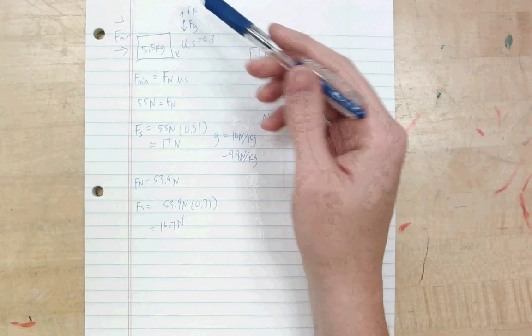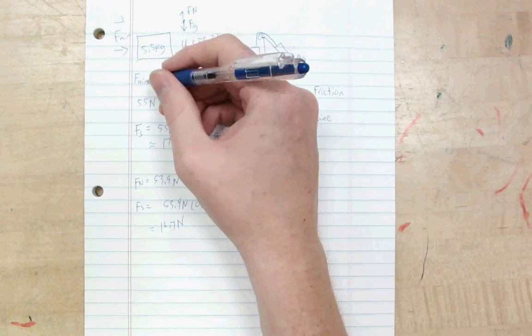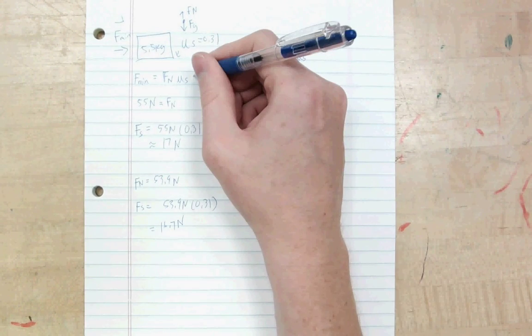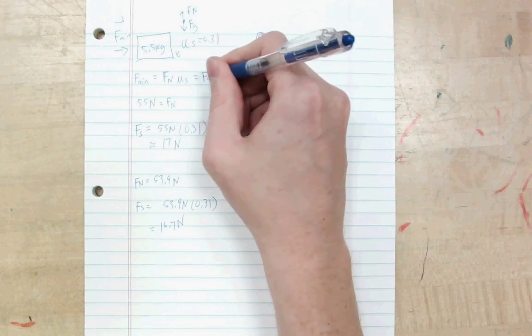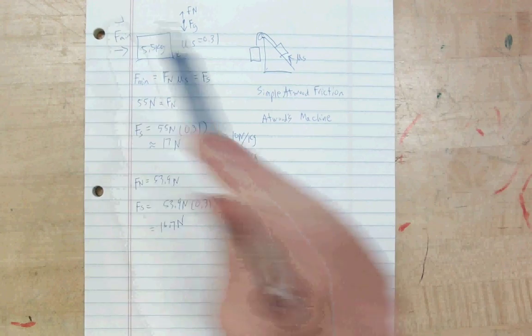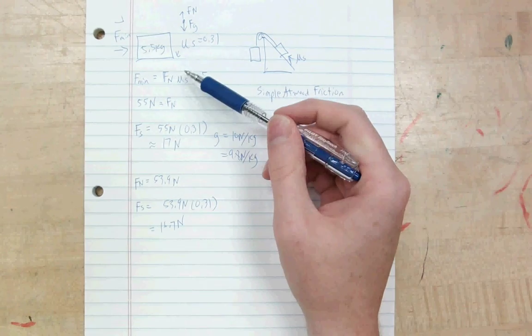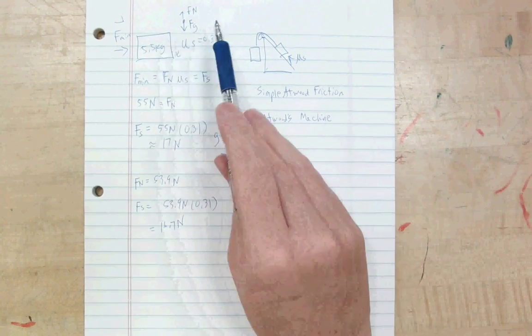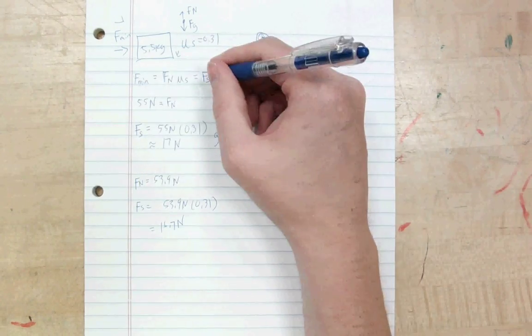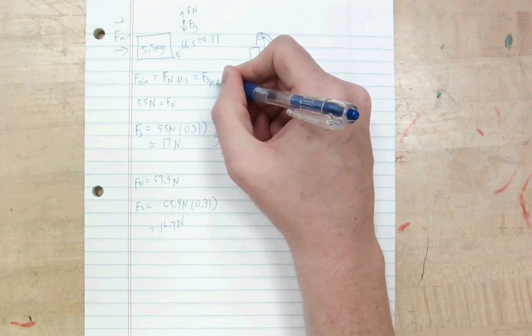So again, that went fast because it's fairly simple. The key is the minimal amount I need to push to get a block started is the static friction, or is equal to the static friction. So I have to push just that hard to overcome static friction. If I push any less, then static friction will simply equal that force. This tells me the minimal amount I need to push. So this is actually the maximum that the static friction can apply.